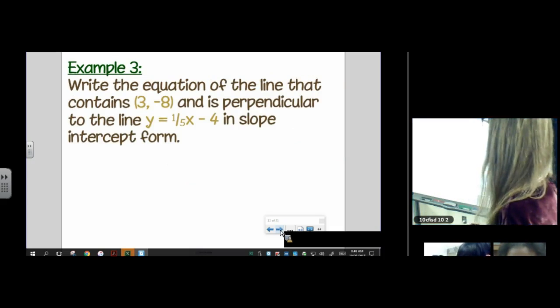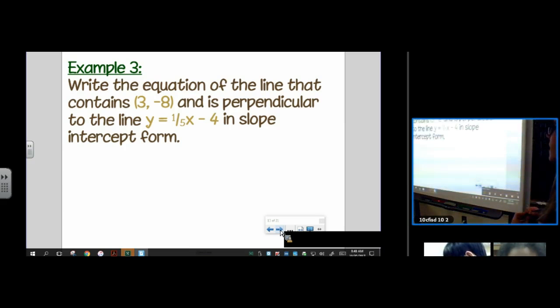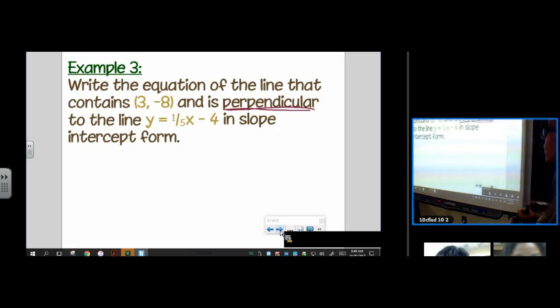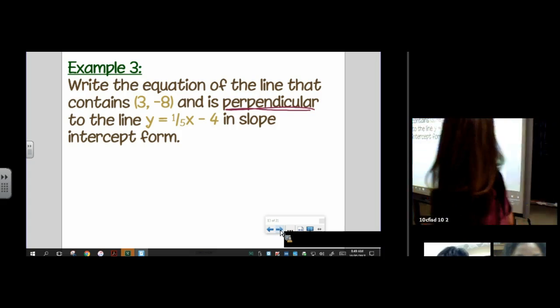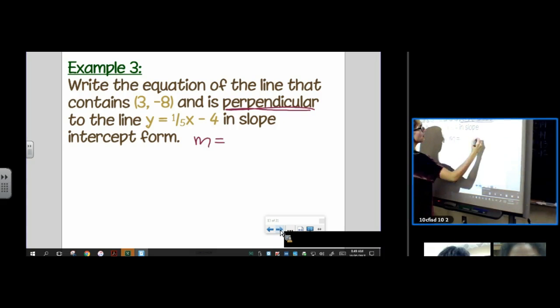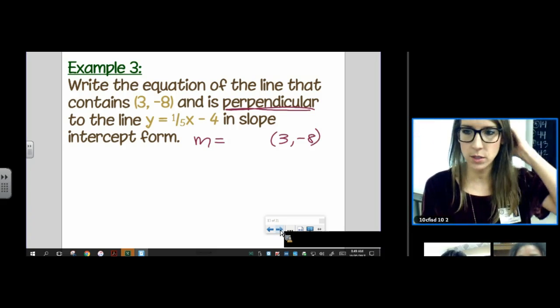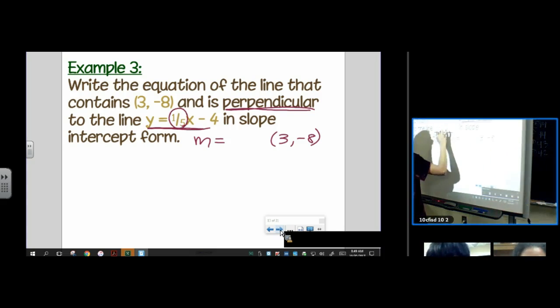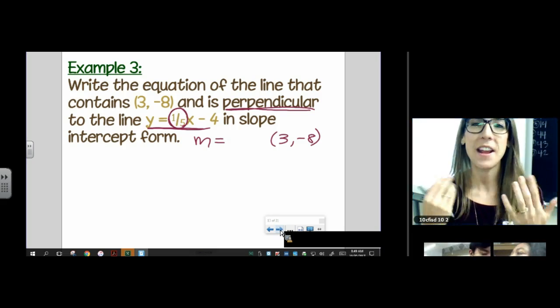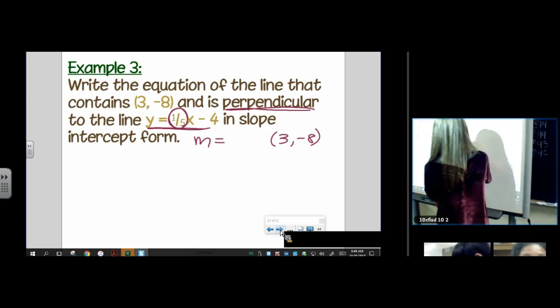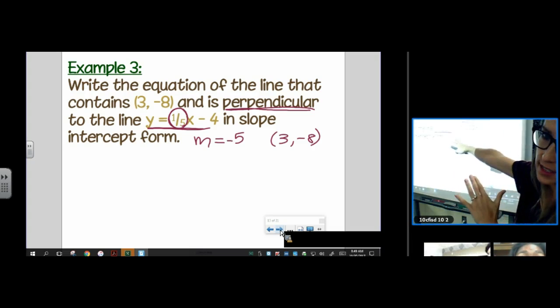Let's try another one. Write the equation of the line that contains (3, -8) and is perpendicular to the line y equals one fifth x minus four in slope intercept form. Okay, so to write it in slope intercept form, we want to have a slope and then we already have a point. We need a targeted slope. We want to be perpendicular to this line. What's this line's slope? One fifth. We spent a whole day writing opposite reciprocals, practicing how to do an opposite reciprocal. So the opposite reciprocal of one fifth is negative five.